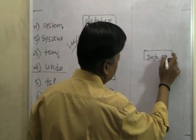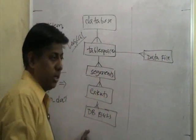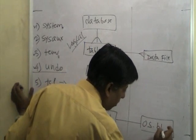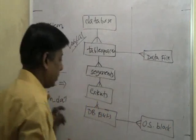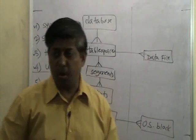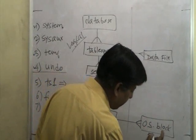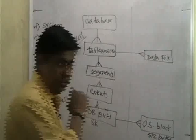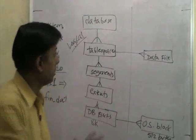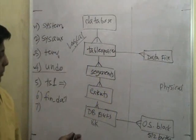The physical view is the data file. One tablespace is made up of data files - this is physical, this is logical. There is also the OS block - operating system block. One database block, the standard block size of 8K, is made up of multiple OS blocks. On Unix, each OS block is 512 bytes.